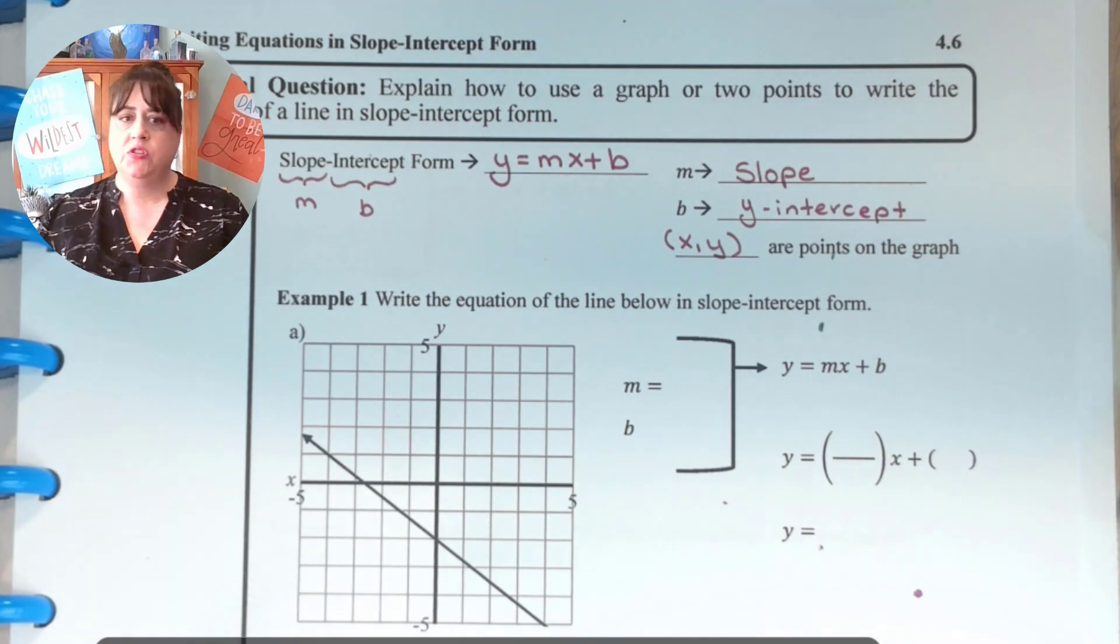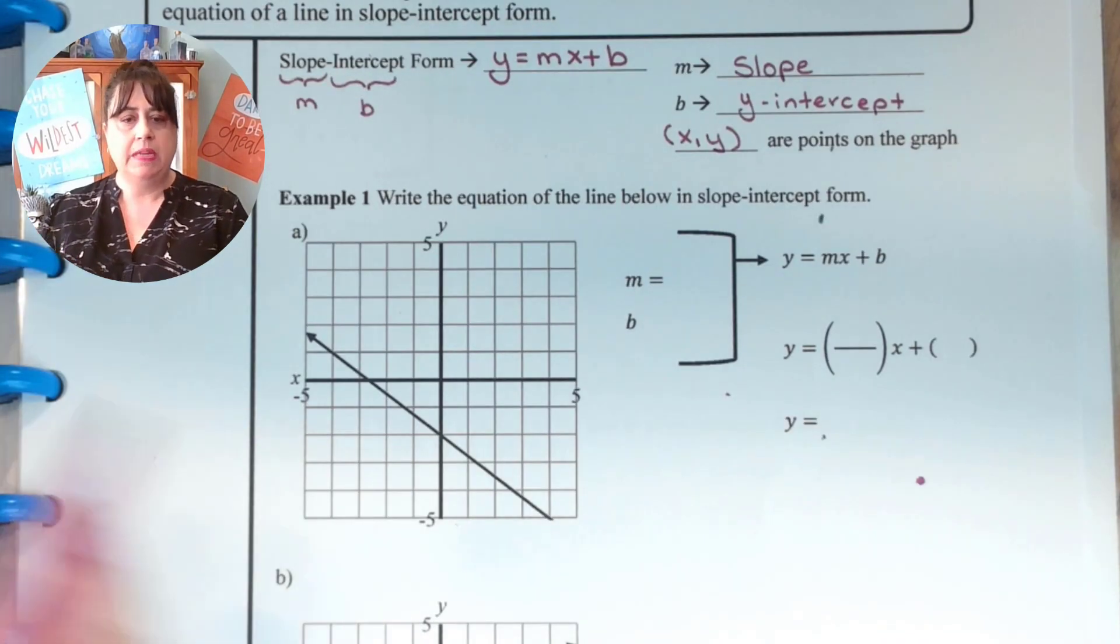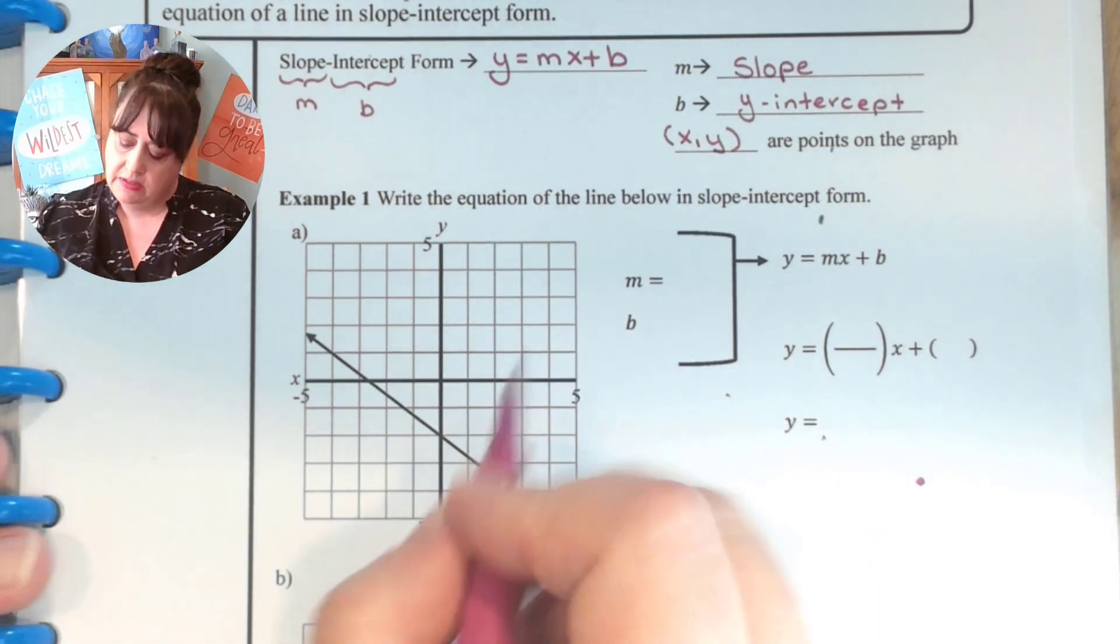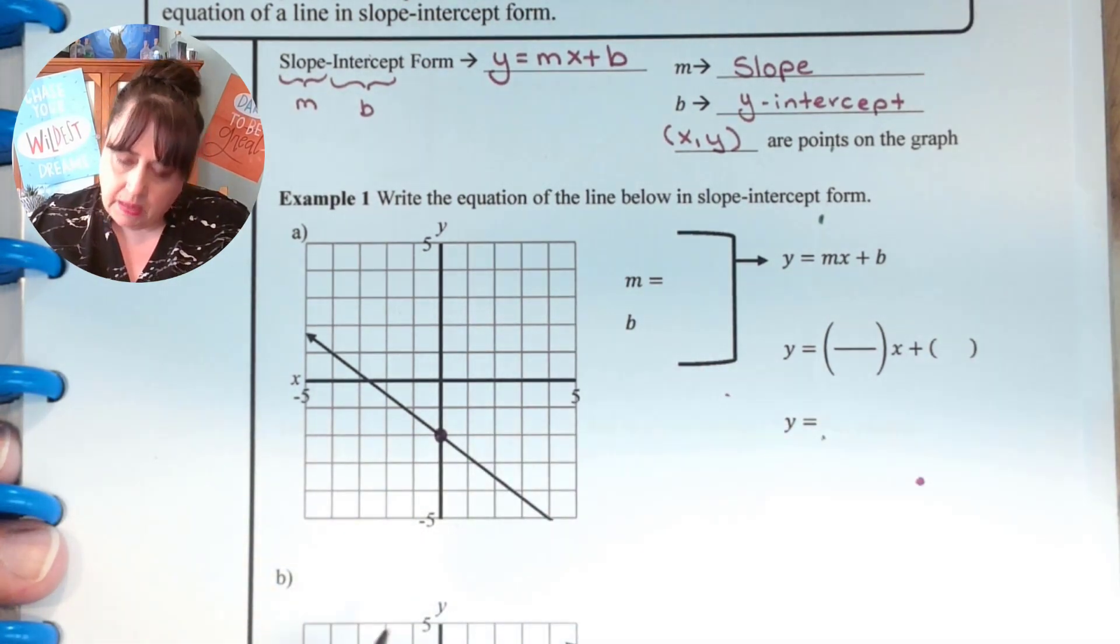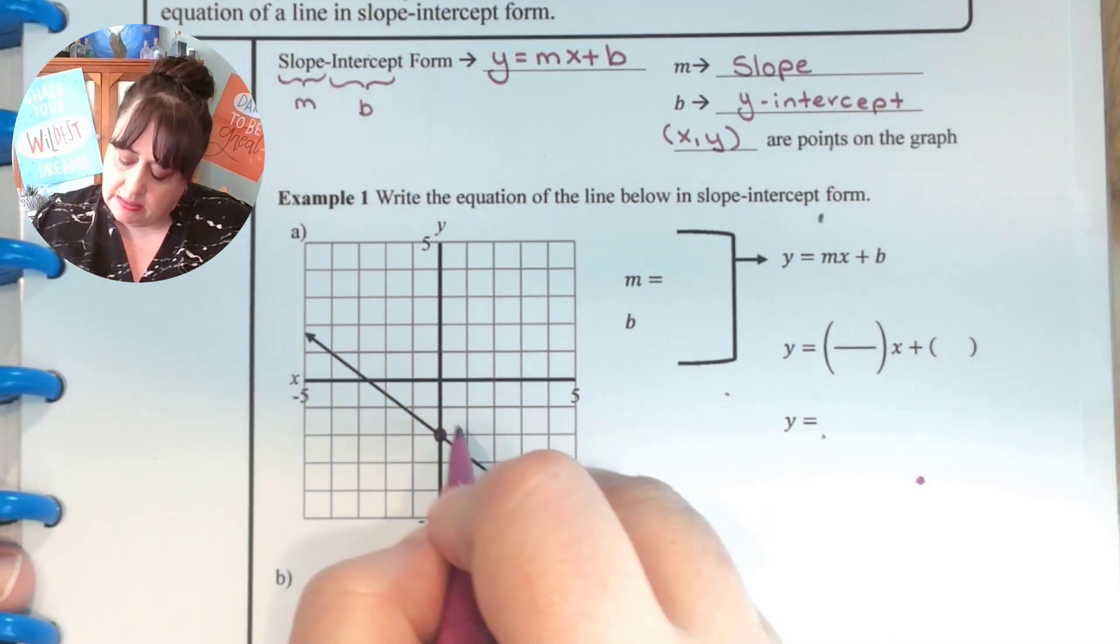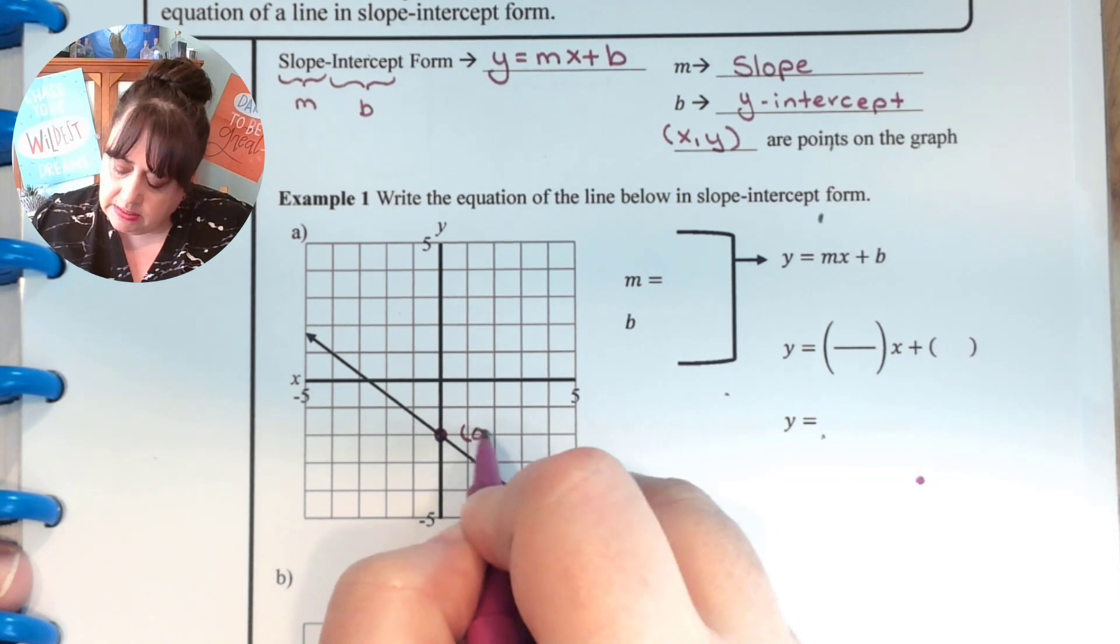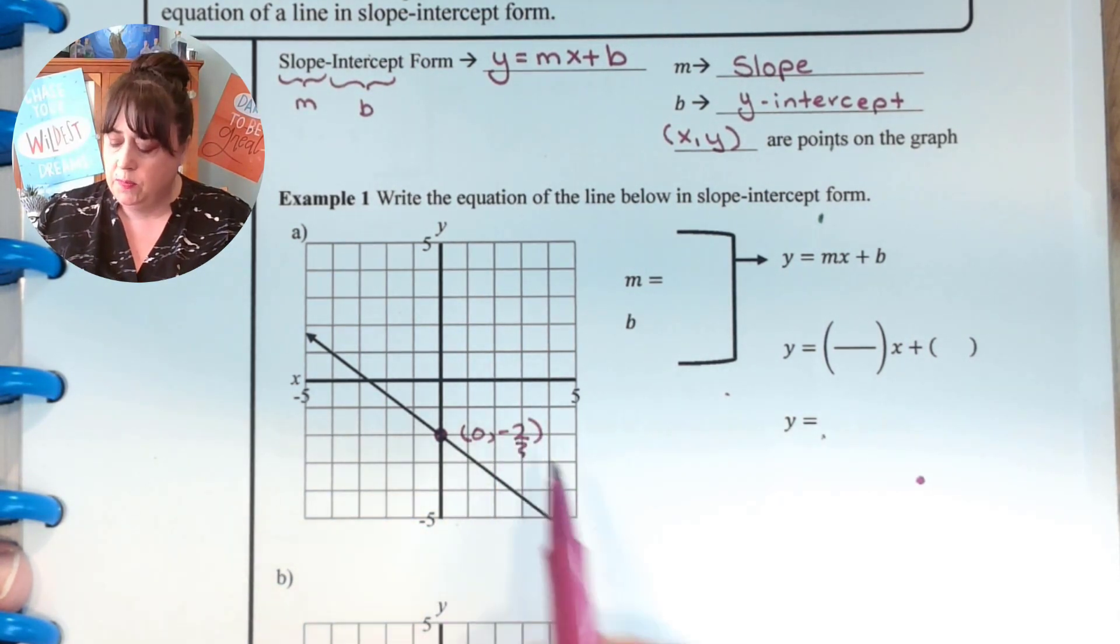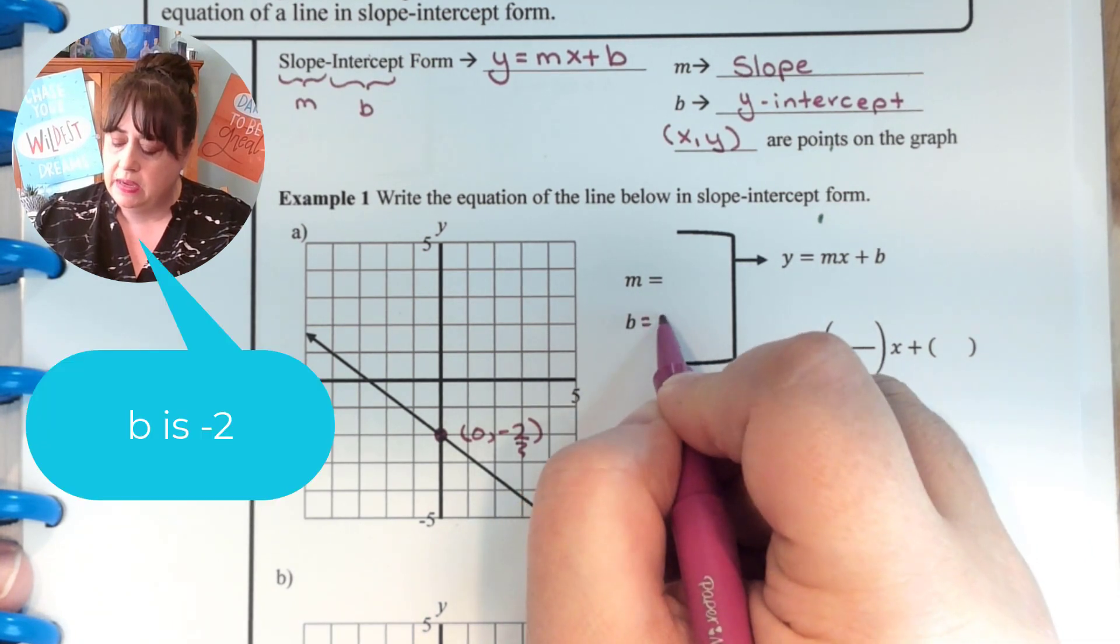So if we look at our very first graph that we have here, we can see that it's going through certain points that we want to draw attention to. For example, this point right here. That point is on the y-intercept, so it's very easy to tell what it is. That is the point (0, negative 2). And the second number is always our b. So we can right off the bat say that b is equal to negative 2.